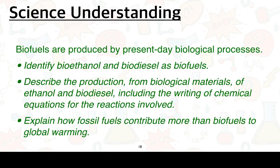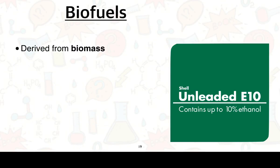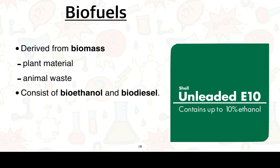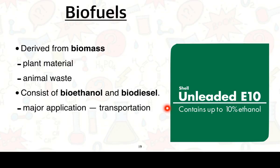This leads into the next set of understandings. Biofuels are produced by present-day biological processes. You need to identify bioethanol and biodiesel as biofuels, describe their production from biological materials including writing chemical equations, and explain how fossil fuels contribute more than biofuels to global warming. Biofuels are derived from biomass — plant material as well as animal waste. Their major application is in transportation. Ethanol is used in fuel blends; for example, E10 petrol contains up to 10% ethanol.